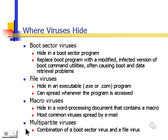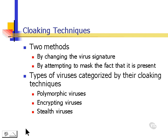Viruses are also categorized by the way that they try to hide. This is called a cloaking technique. There are basically two different methods that a virus uses to hide: it either tries to change its signature, or it attempts to mask the fact that it's present at all.